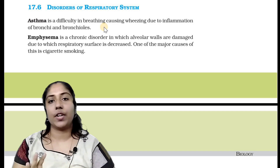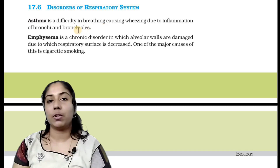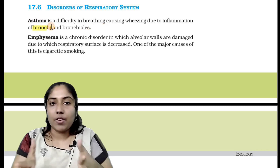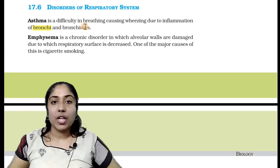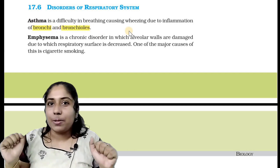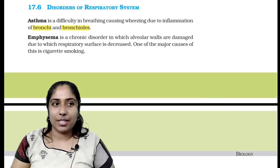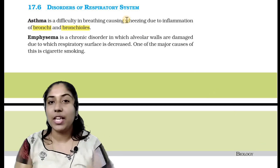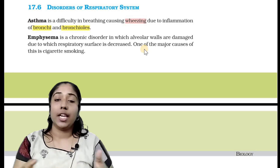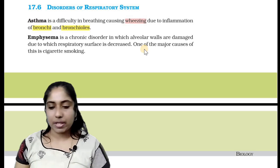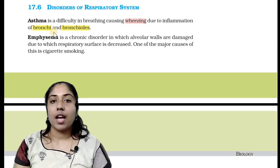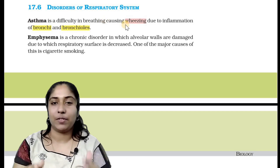The main thing is bronchus and bronchioles inflammation. Because of this inflammation, the airway becomes very narrow, and there is a wheezing sound. This wheezing is the result of inflammation of the bronchus and bronchioles, and is associated with breathing difficulty.